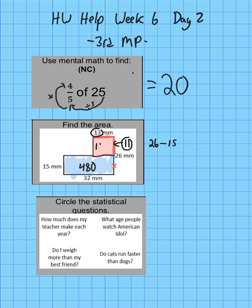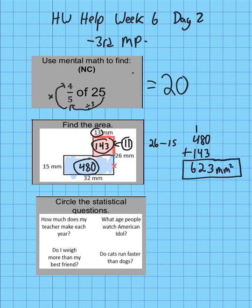But I'm not done. Remember, to get your final answer you have to add the areas of the different parts. So I'm going to do 480 plus 143, and yes you're allowed to use a calculator on this—is 623. And since it's area, it's going to be square millimeters. That's how you find that one.